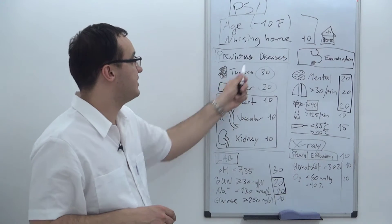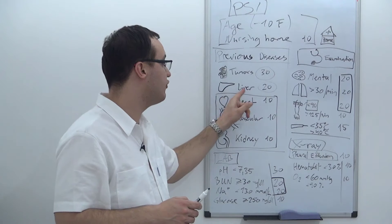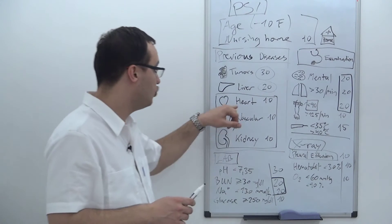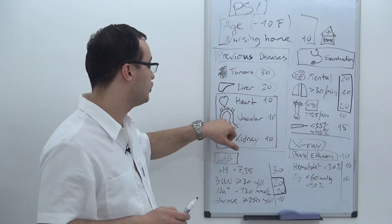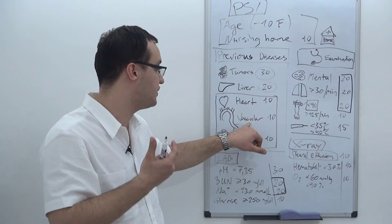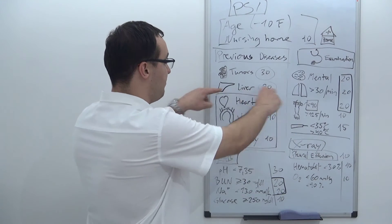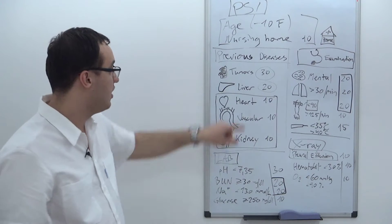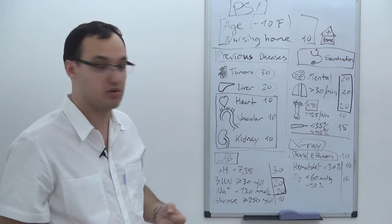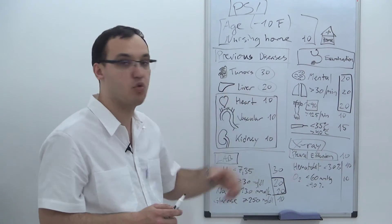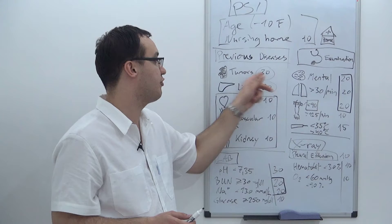Then we ask about previous diseases. If the patient has a tumor, you get 30 points. Chronic liver disease gives 20 points. Heart failure gives 10 points, vascular diseases (cerebrovascular) give 10 points, and kidney disease gives 10 points. So heart disease, vascular disease, and kidney disease all get 10 points; liver disease gets 20 points; and tumors get the highest at 30 points.